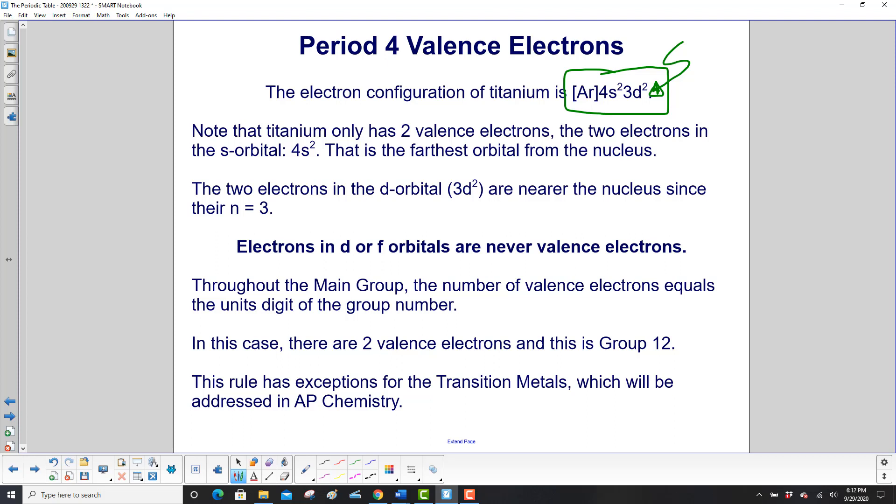Titanium only has two valence electrons. The two electrons in the s orbital, 4s2, that is the farthest orbital from the nucleus. The two electrons in the d orbital, 3d2, are near the nucleus since their n is equal to 3. That's their energy level.